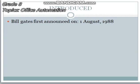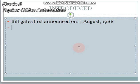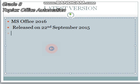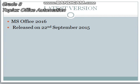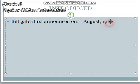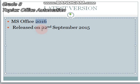Regarding the introduction: Microsoft Office was introduced by Bill Gates, who first announced Microsoft Office on 1st August 1988. The latest variant of Microsoft Office is Office 2016, released on 22nd September 2015.